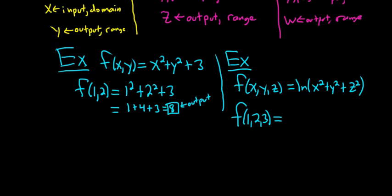So in this case, we replace all of the x's with 1, the y's with 2, and the z's with 3. So it would become the natural log of 1 squared plus 2 squared plus 3 squared. This is 1 plus 4 plus 9. So it's going to be the natural log of 14. 5 plus 9 is 14. So that would be the answer there.